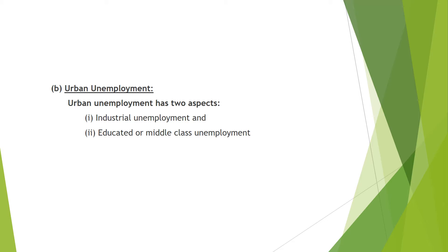Another distinct type of unemployment common in almost all urban areas is educated unemployment. This problem is very much acute among the middle class people. With rapid expansion of general education, the number of educated people is increasing day by day, but due to the slow growth of technical and vocational educational facilities, a huge number of manpower is unnecessarily diverted towards general education, leading to a peculiar educated unemployment problem. The total number of educated unemployed increased from 5.9 lakh in 1962 to 230.50 lakh in 1994.